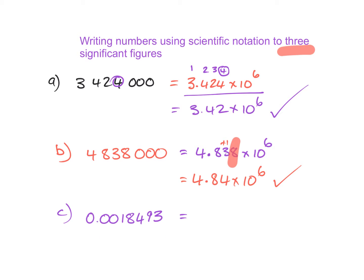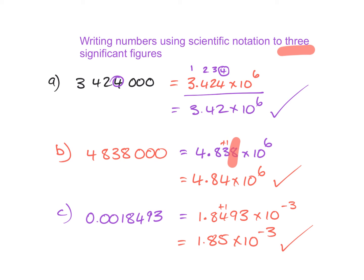Last one — give this one a go, and remember to write it to three significant figures. In order to arrive at my answer, I've just rewritten it in scientific notation. However, I do need to write it in the format of three significant figures. Looking at my digits, I have 1, 2, and 3 significant figures. I need to look at my fourth to determine if it is greater or smaller than 5 — and in this case it is greater, so I need to add 1 to that 4. So I have 1.85 multiplied by 10 to the negative 3. That is scientific notation using significant figures.